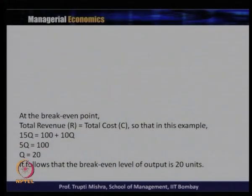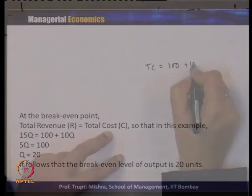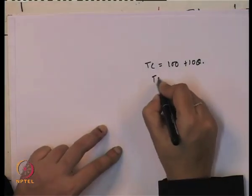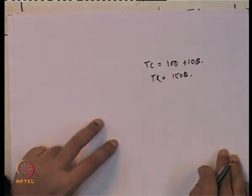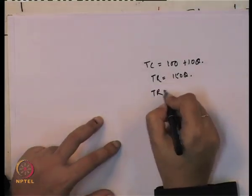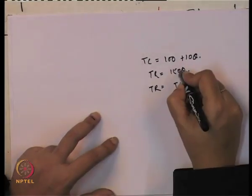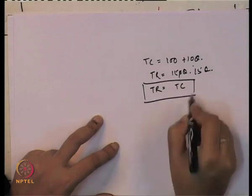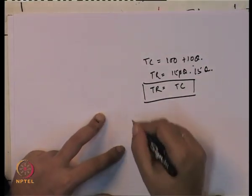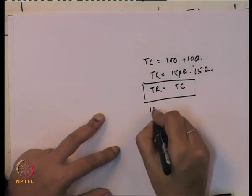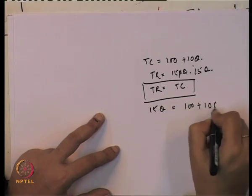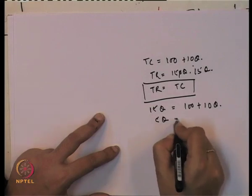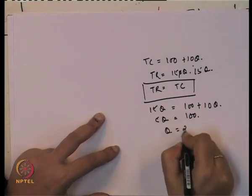To identify the break-even point, we set total revenue equal to total cost: 15Q = 100 + 10Q. Simplifying: 5Q = 100, so Q = 20. The break-even level of output is therefore 20 units.